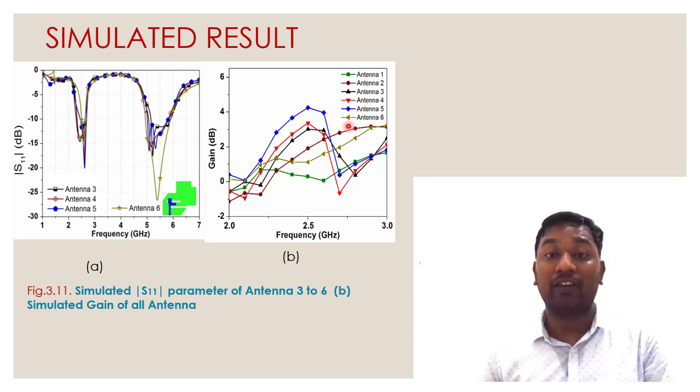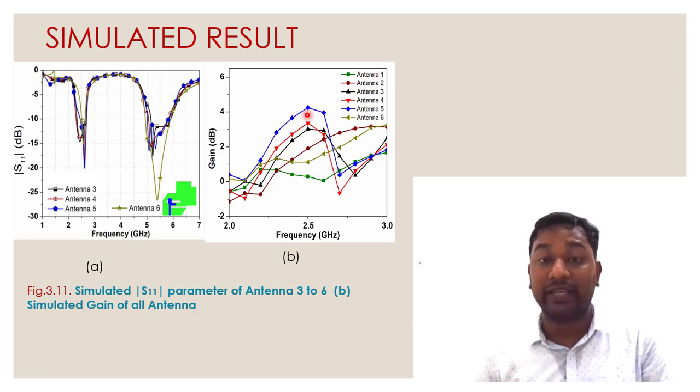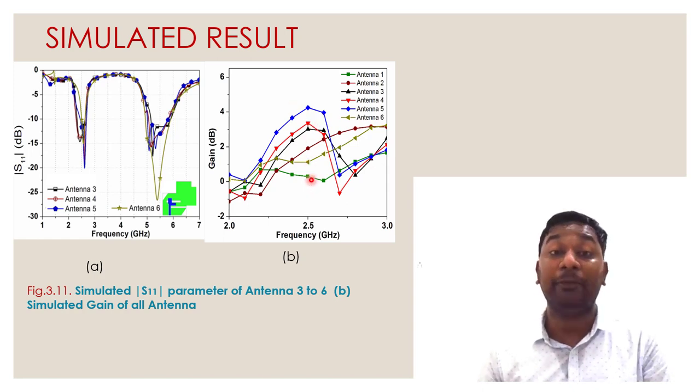...as well as antenna one and antenna two. So it has nearly three to four dB gain enhancement in a particular layer. That is the important property: to enhance the gain using metamaterial.